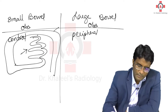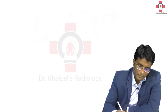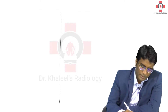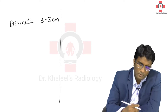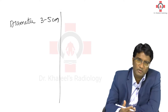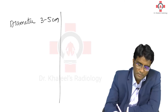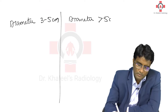Another important finding in small bowel obstruction is the luminal diameter, which is about 3 to 5 centimetres only and does not go much more than 5. In large bowel obstruction, the diameter can go more than 5 centimetres.